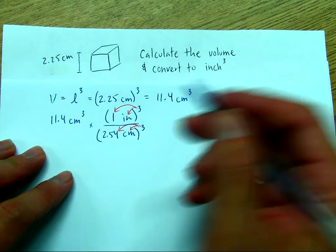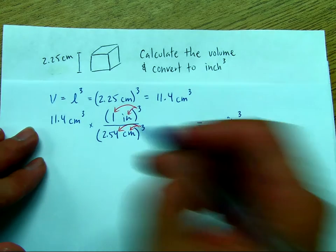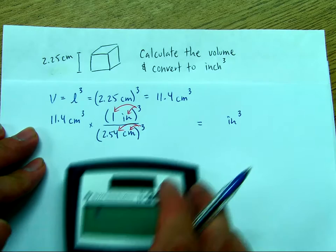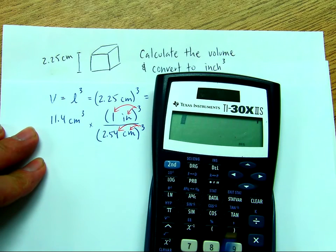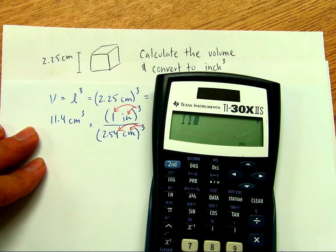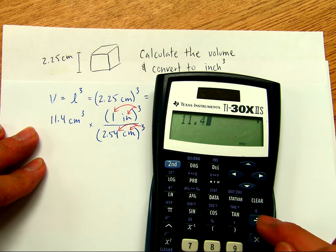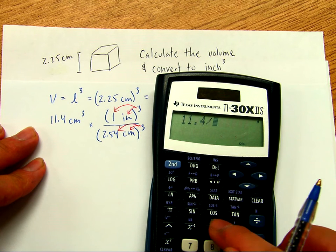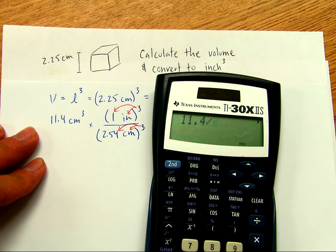Okay, so now it's all set up, we're going to plug it into the calculator exactly how we see, 11.4 divided by, I'm going to use a parenthesis, you don't have to, but I am.